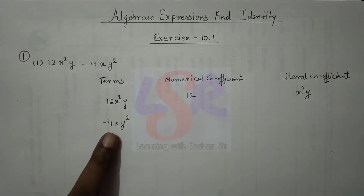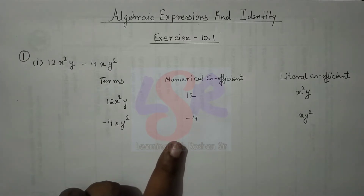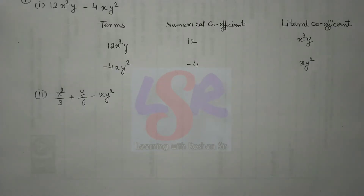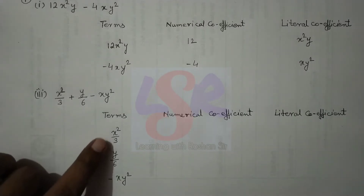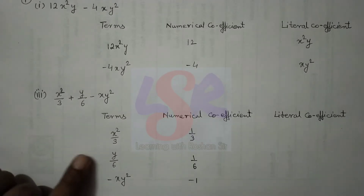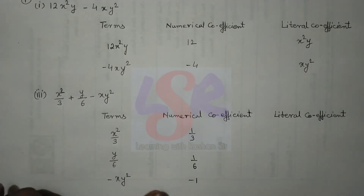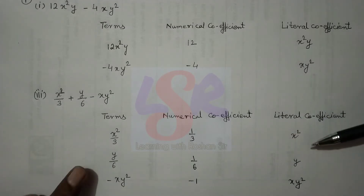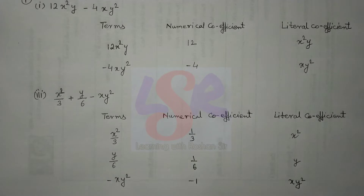In the second term, the numerical coefficient is minus 4 and the literal coefficient is xy². Now let's see the next part: x²/3 plus y/6 minus xy². Here we have three terms: x²/3, y/6, and minus xy². The numerical coefficients are 1/3, 1/6, and minus 1, while the literal coefficients are x², y, and xy² respectively.